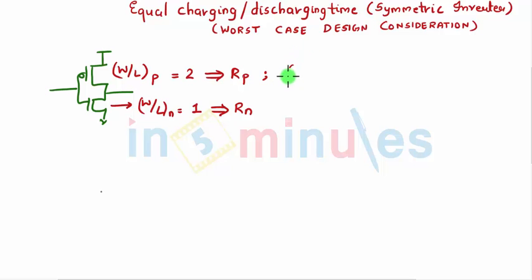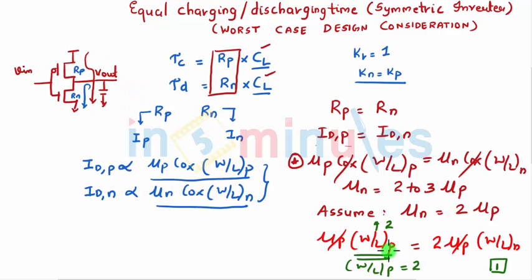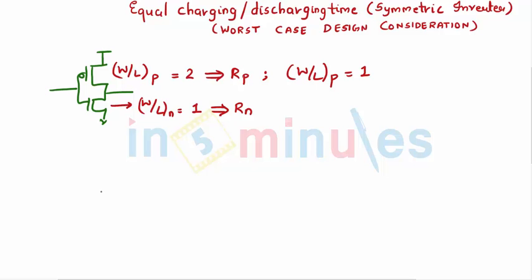We also saw that if (W/L) of PMOS would have been basic, which was equal to 1, then this term and this term wouldn't have been same. That also meant that Idp would have been slower or charging would have taken a longer period of time. So if (W/L) of PMOS would have been equal to 1, what would have been my equivalent resistance?